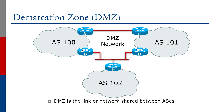Now let's have a look at how you connect ASs. The network segment which links two ASs is called the demarcation zone, or DMZ. This network segment doesn't belong to either AS, but carries traffic and routing information between the ASs. The address space used for the link can be supplied by either AS, or it may be supplied by a neutral third party, such as an internet exchange point.